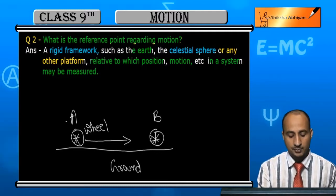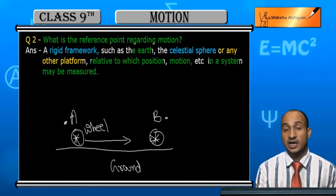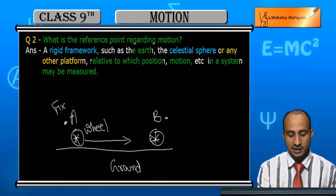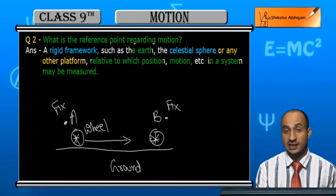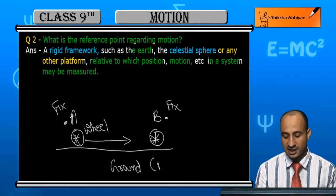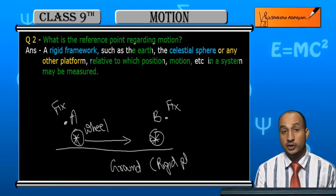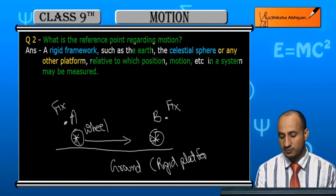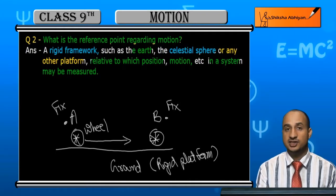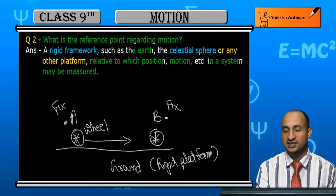If you want to measure this motion, you have to fix point A and point B here. And to fix them, you need a rigid platform. You need a rigid platform, otherwise you cannot fix these points.